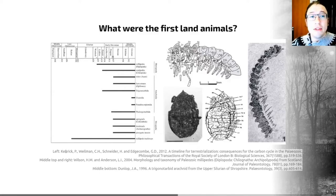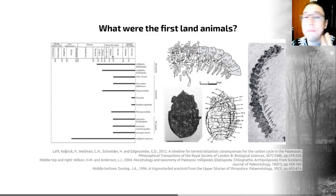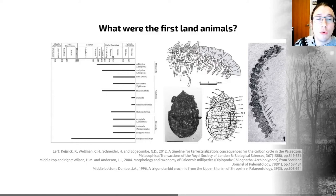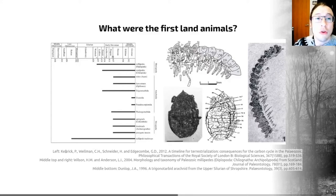On the basis of those trackways, we think that the earliest animals moving around on land were probably millipede-like organisms. The earliest land animals of which we have fossils appear just after the Cooksonia fossils.